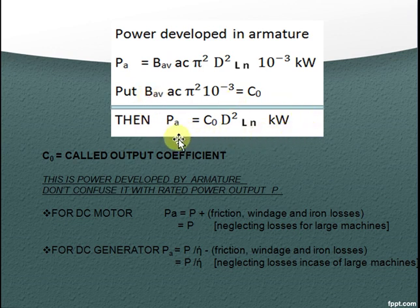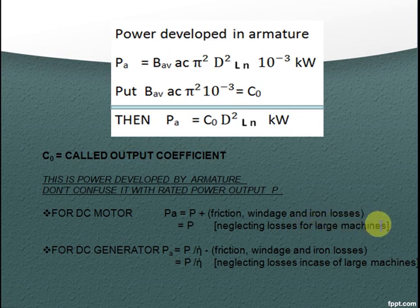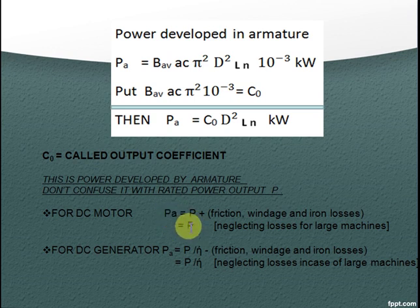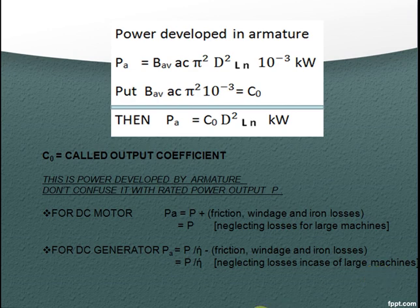This is power developed by armature. Don't confuse it with rated power output P. For DC motor Pa equal to P plus friction windage and iron losses, neglecting losses for large machines we will get it same as P. For DC generator Pa equal to P by efficiency minus friction windage and iron losses. We can neglect losses for large machines.